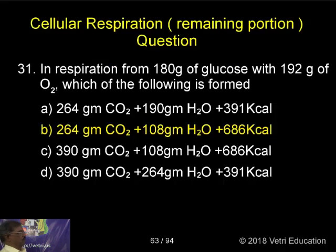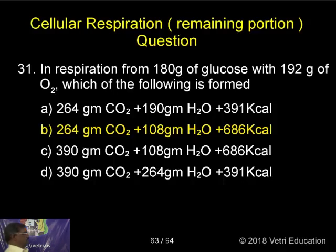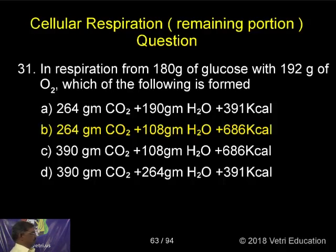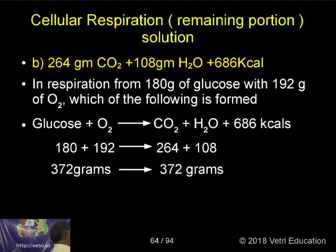In respiration, from 180 grams of glucose with 192 grams of oxygen, which of the following is formed? You can balance the reaction just like that with the amount. The correct answer is B: 264 grams of carbon dioxide and 108 grams of water, plus 686 kilocalories of energy.